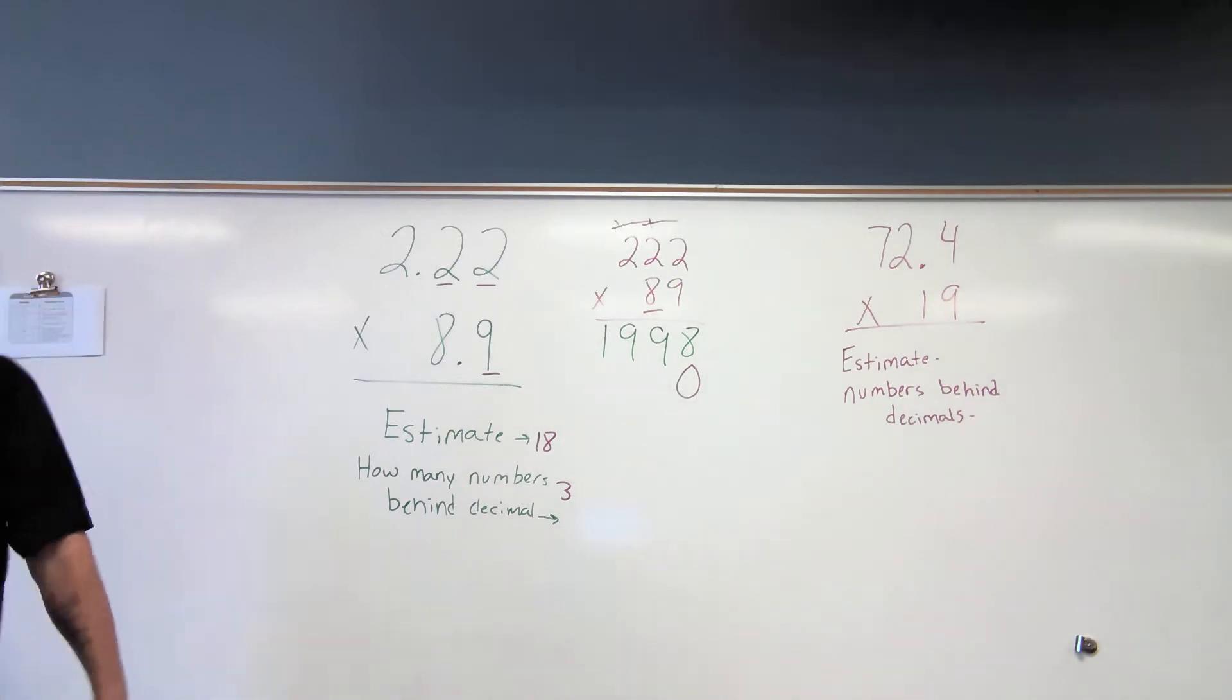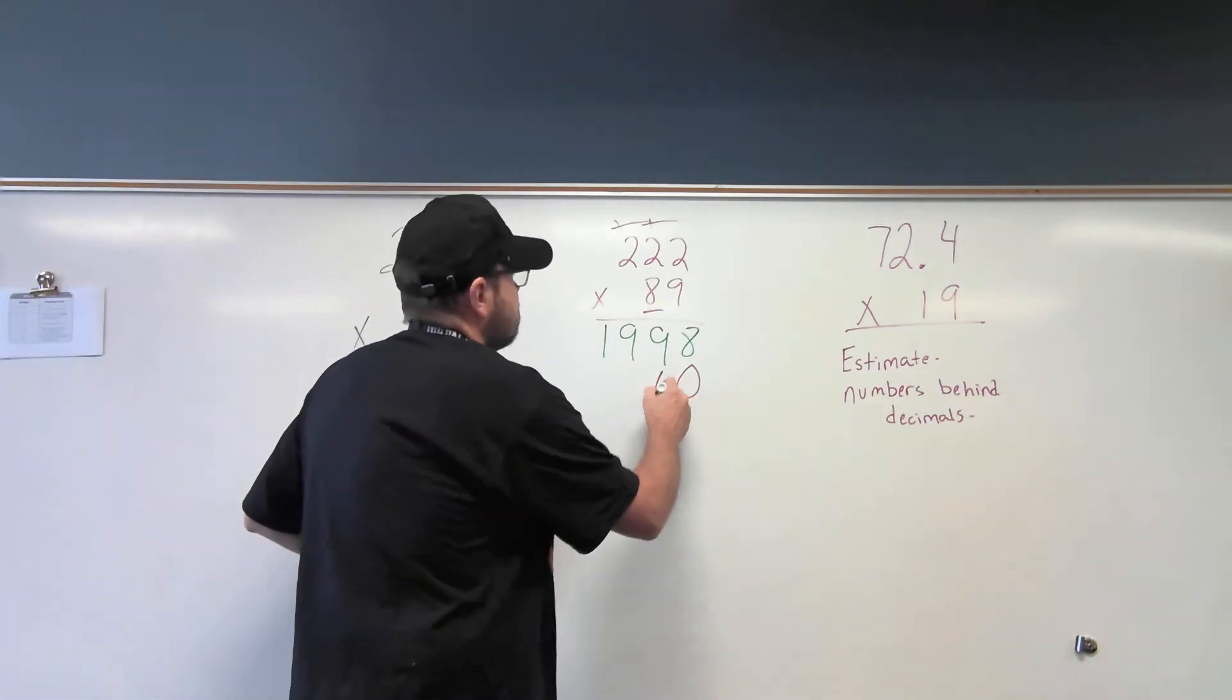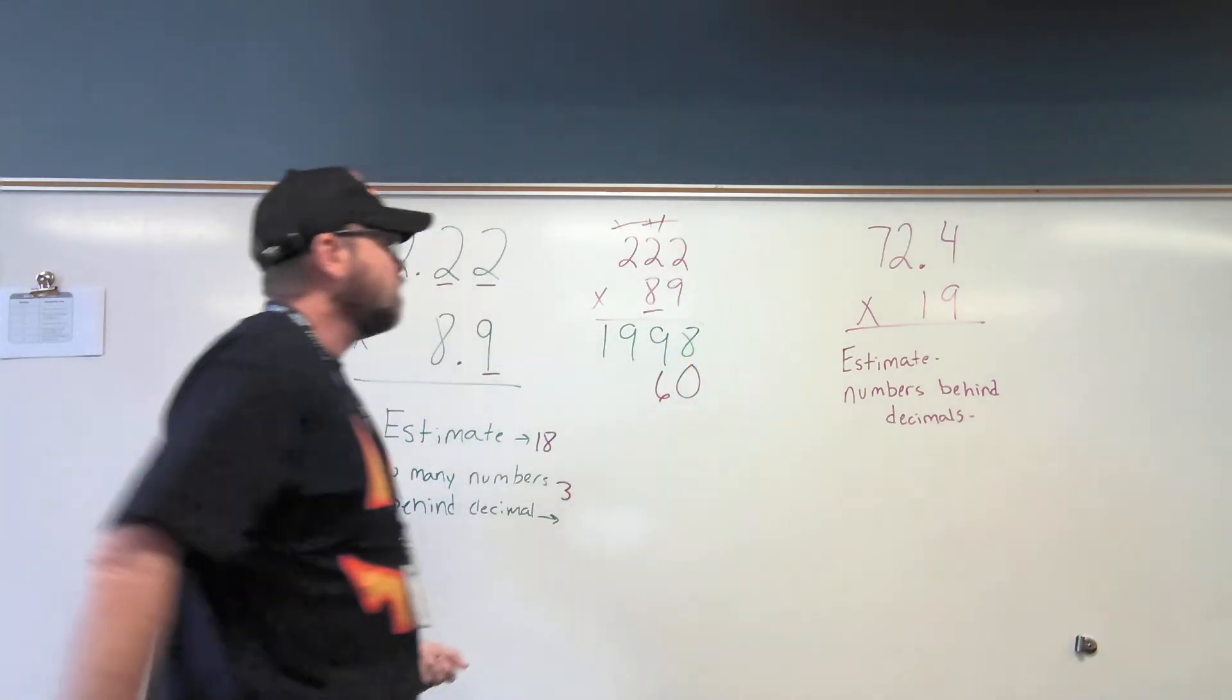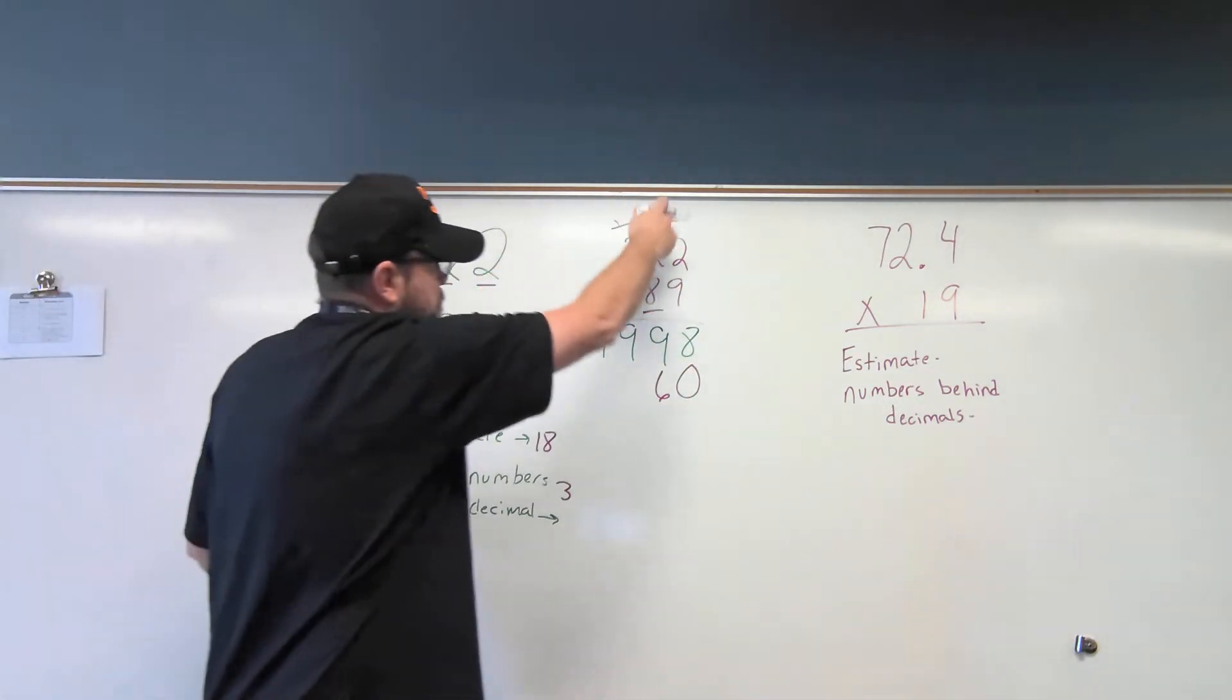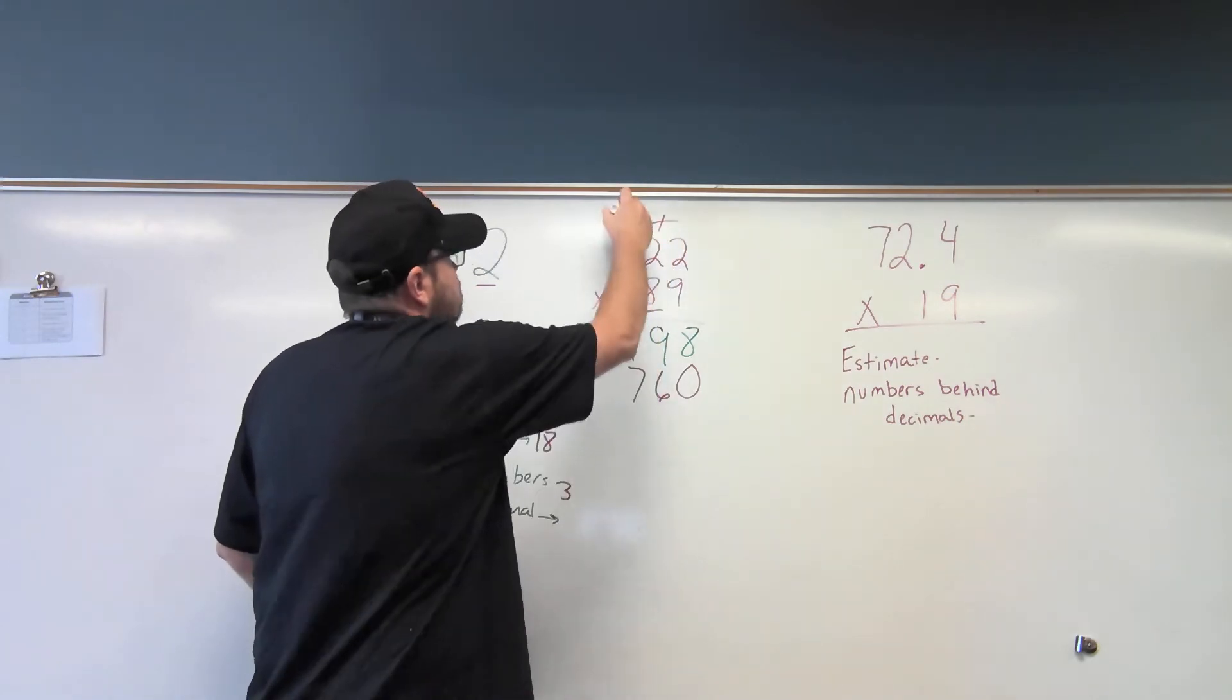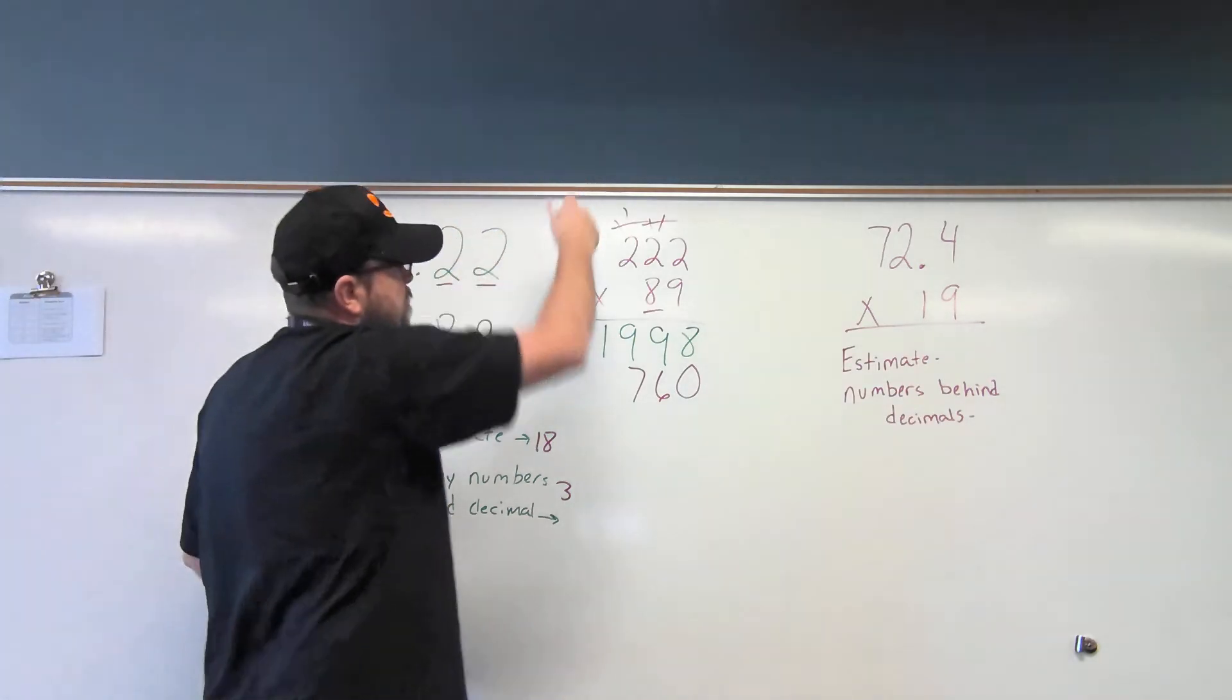Jeremy, what is 8 times 2? 16. 16. So, then I have to put that one up there. Jeremy, what is 8 times 2? Plus the 1 we roll. 17. Jeremy, what is 8 times 2? Plus the 1 other one? 17.